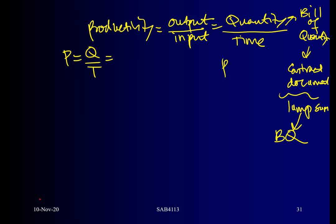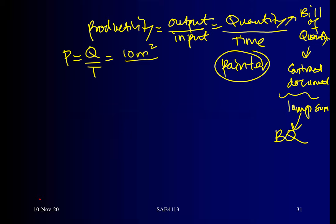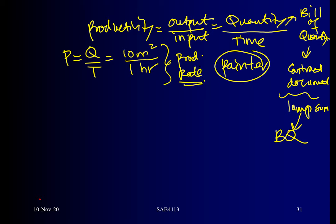Going back to our equation: P is equivalent to Q over T. For example, let's say a painter — one laborer — can paint 10 square meters of wall per hour. That is what we call productivity rate. When the word 'rate' is there, something must be divided by something. Note that productivity rate and unit rate are not the same — unit rate is meant for cost, how much an item costs per unit.